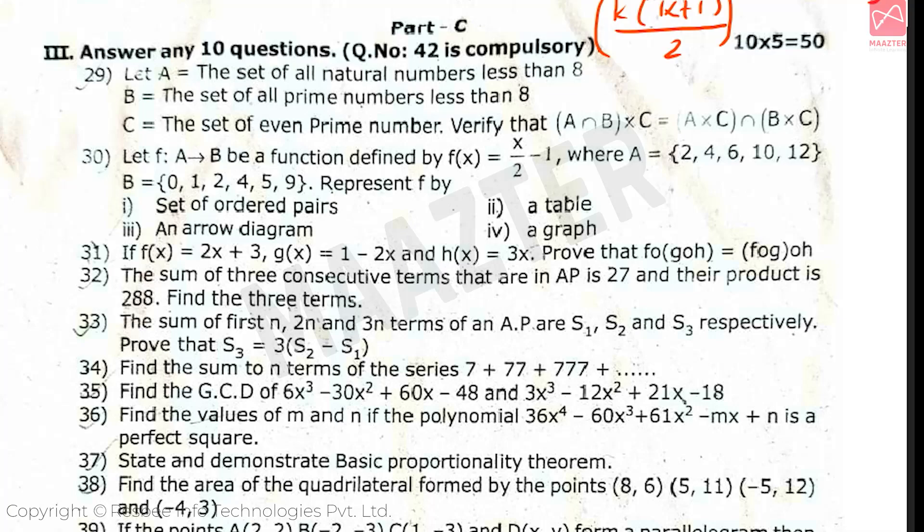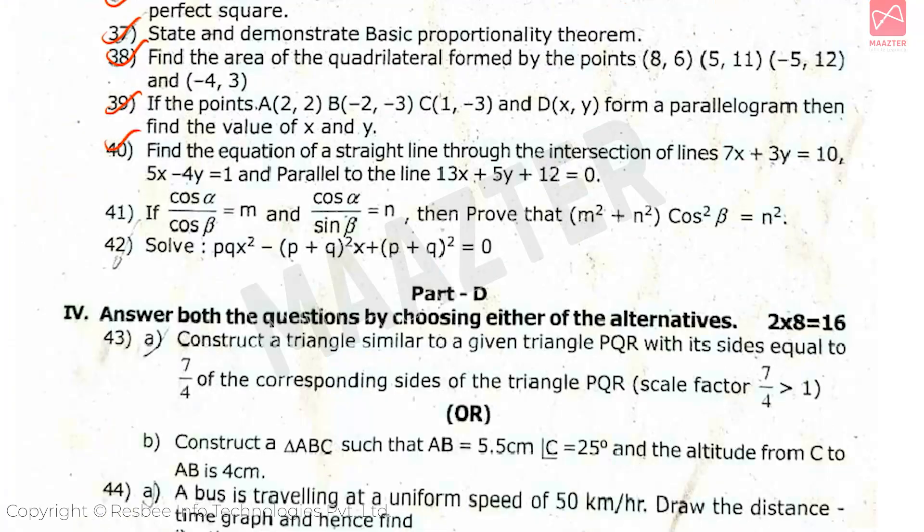Next, Part C, 5 mark section questions. In total 14 questions are there, we have to answer 10. And question number 42 is compulsory. Question number 42 is: solve pqx² - (p+q)²x + (p+q)² = 0. So,